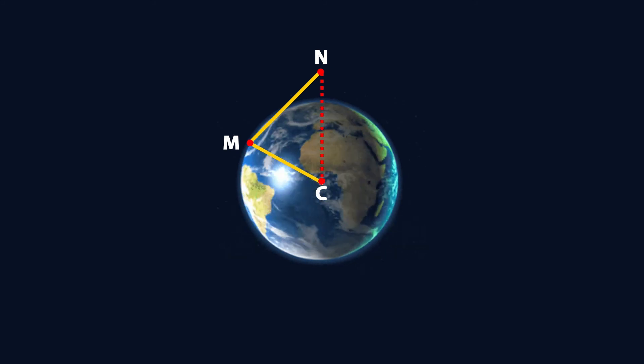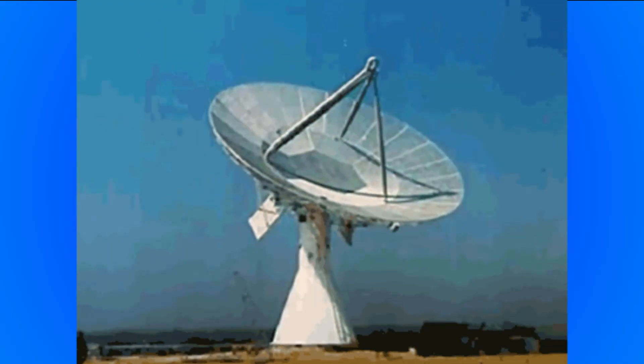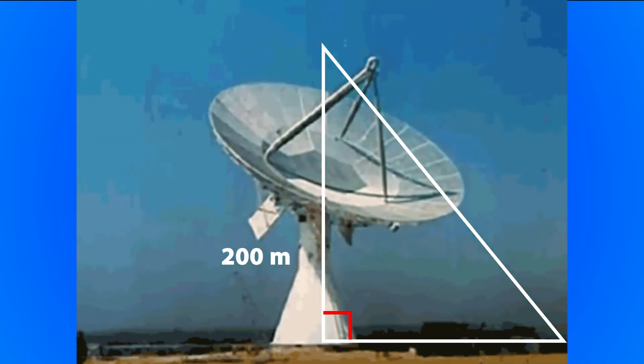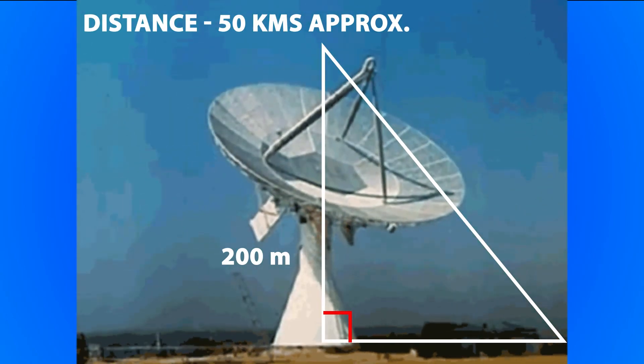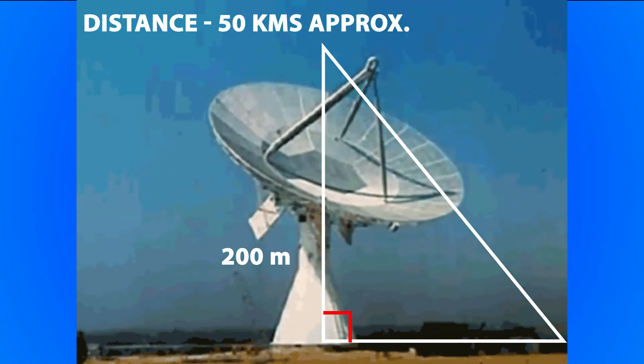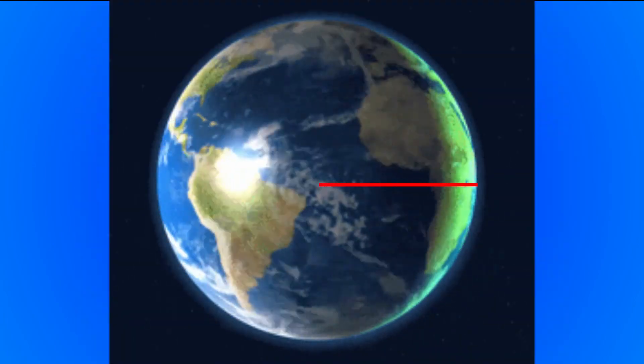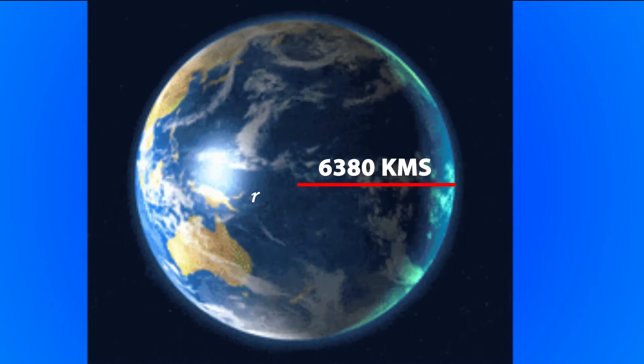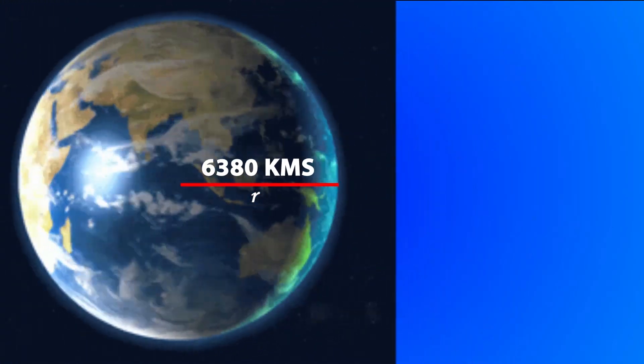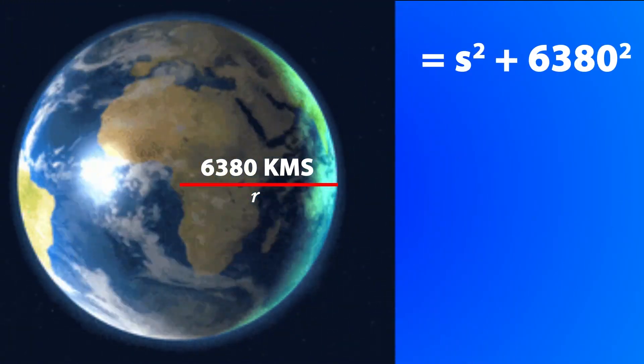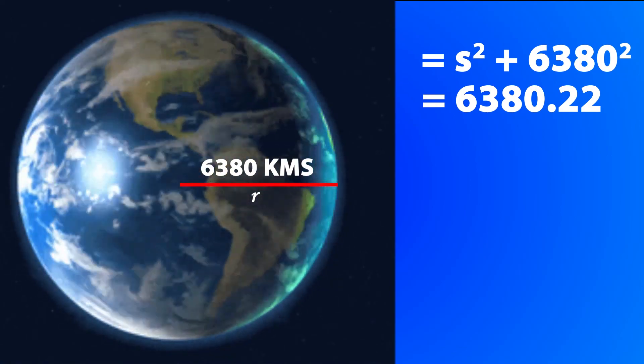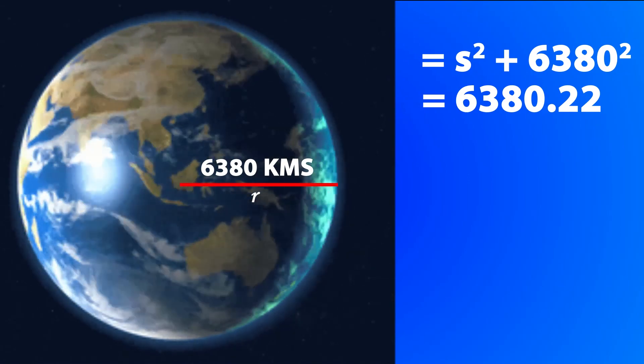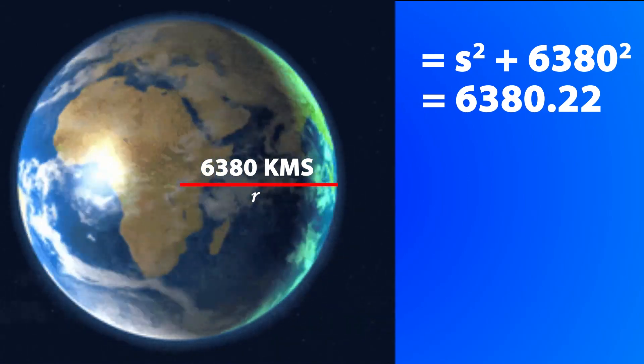Since a line tangent to a circle is perpendicular to its radius, this distance can be determined using the Pythagorean theorem. A radio antenna that is 200 meters tall can have a signal that reaches a distance of approximately 50 kilometers. Since the radius of the earth is approximately 6380 kilometers, the equation s squared plus 6380 squared equals 6380.22 is used to find the signal radius s based on the geometric representation depicted here.